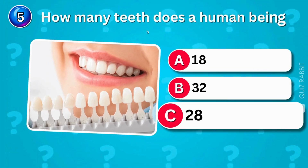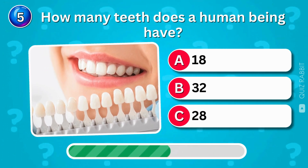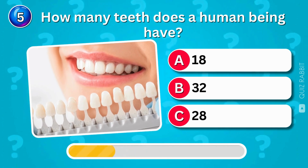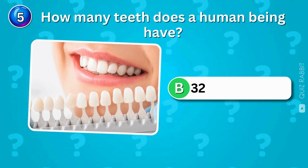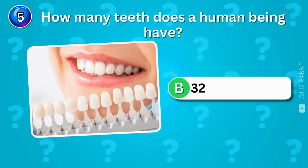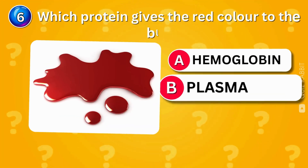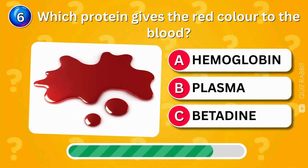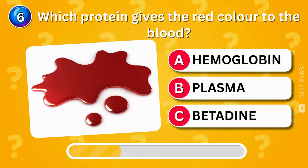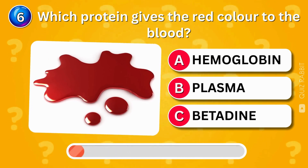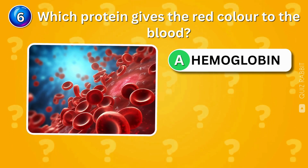How many teeth does a human being have? Humans have 32 teeth, including those tricky wisdom teeth — hope yours aren't causing trouble! Which protein gives the red color to blood? Hemoglobin gives blood its red color; without it, our blood wouldn't look the same.